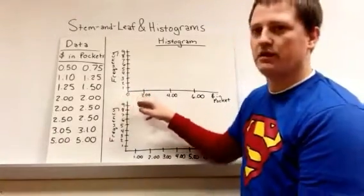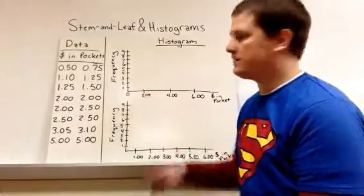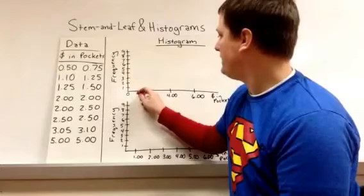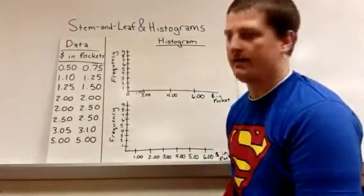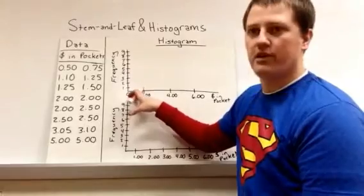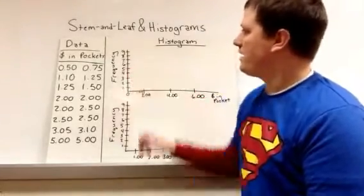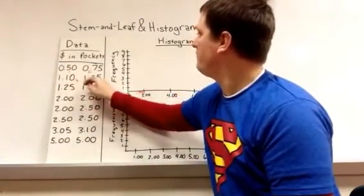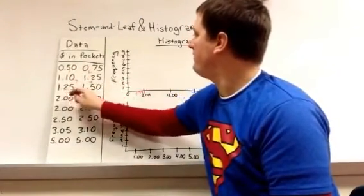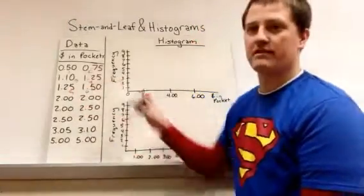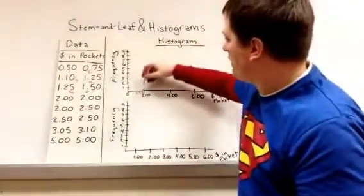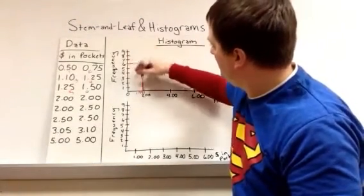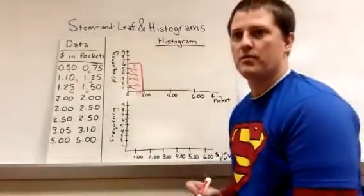For this one we're going to use the interval of two dollars, from zero to two dollars. Meaning this box right here is anywhere from zero to a dollar ninety-nine because that's just shy of two dollars. So any data that falls in there we're going to use to make our box. So between zero and two dollars we have one, two, three, four, five, six. We have six data points there. So we're going to go from here all the way up to six and we have our first bin.